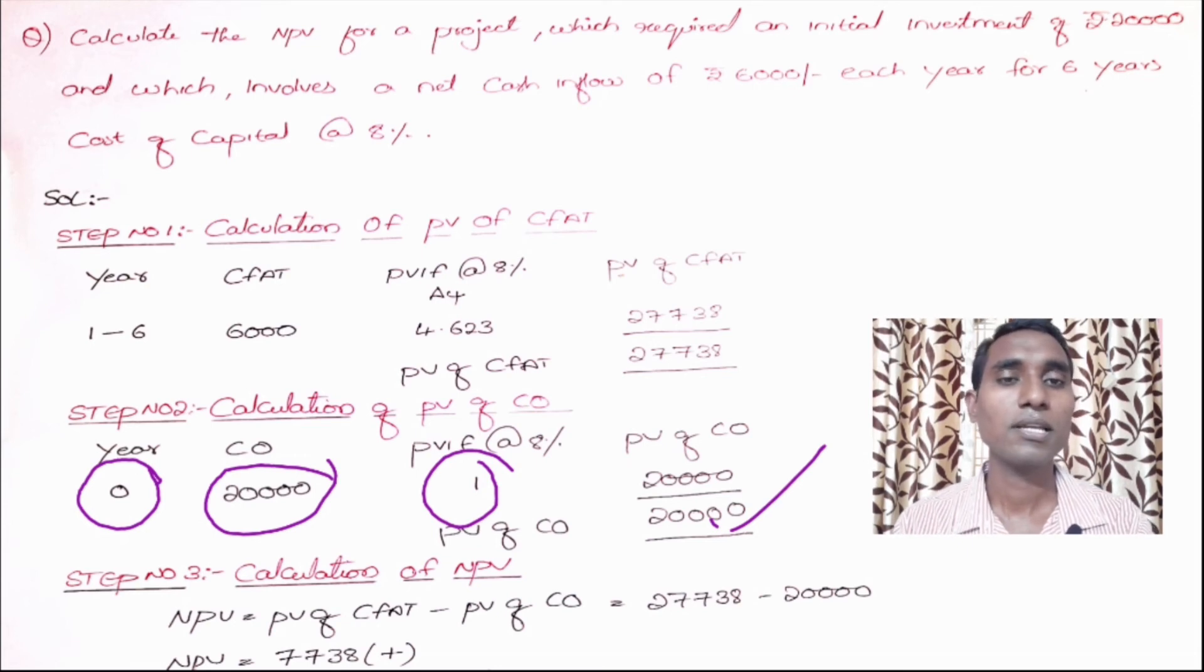Calculation of NPV, step number three: step number one output minus step number two. So 27,738 minus 20,000 equals 7,738.